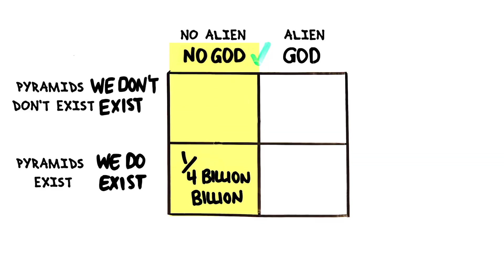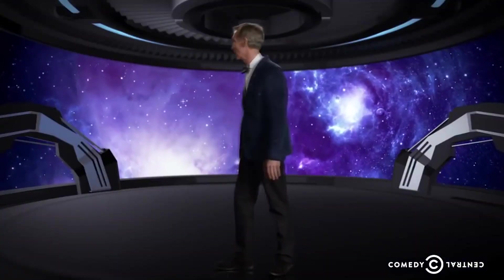So let's make up a tiny probability and say that there's a one in four billion billion chance of humanity coming into existence in a world with no god. What? You just made that number up? That makes no sense — it's just bullshit.